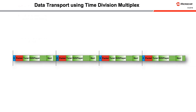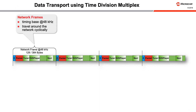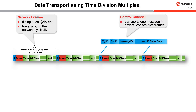The network frames provide the time base for the entire network, constituting an uninterrupted stream of frames and bits from which the frame clock and bit clock are derived. Each frame travels around the entire network, cyclically transporting data to and from all devices. All network frames have the same structure, starting with some administrative bytes and the control channel shown in blue, followed by the packet channel in red, and the streaming data area in green. All devices on the network share the control channel, but since only one device can send a message at a time, all messages are transmitted sequentially.